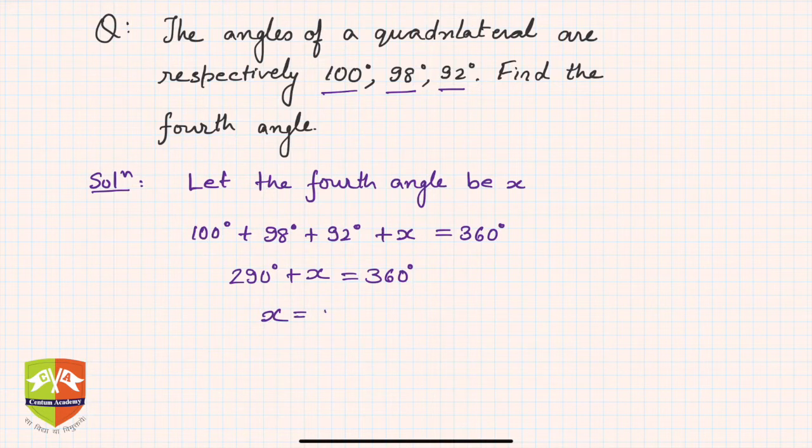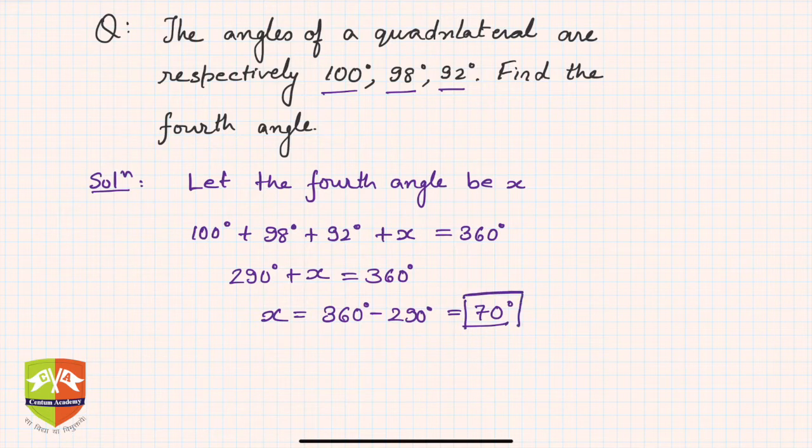So you can find x is equal to 360 degrees minus 290 degrees, which is equal to 70 degrees. And my dear friends, this is the answer: 70 degrees.